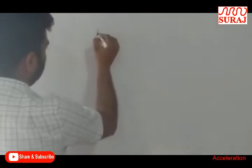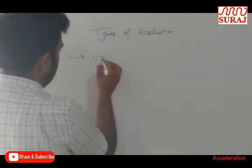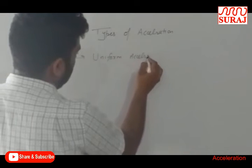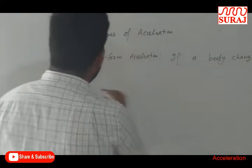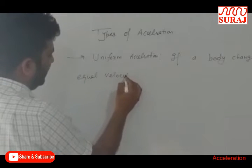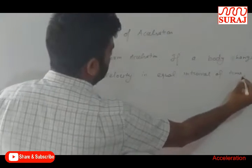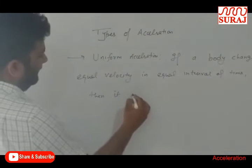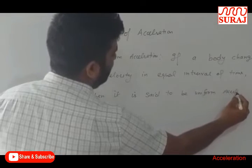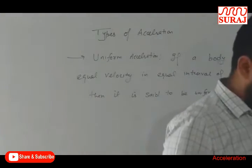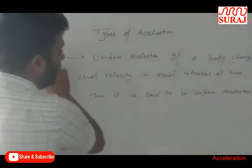Now, types of acceleration. The first type is uniform acceleration. If a body changes its velocity by an equal amount in equal intervals of time, then it is said to be uniform acceleration.